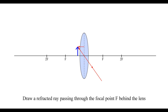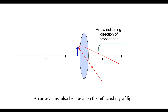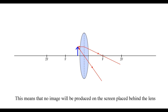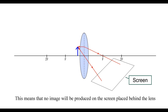Draw a refracted ray passing through the focal point, F, behind the lens. An arrow must also be drawn on the refracted ray of light. Notice that the light rays that pass through the convex lens are not focused. This means that no image will be produced on a screen placed behind the lens.